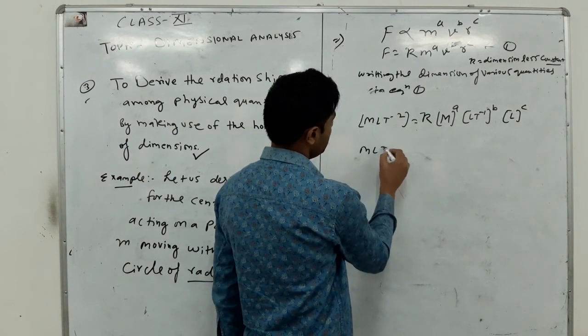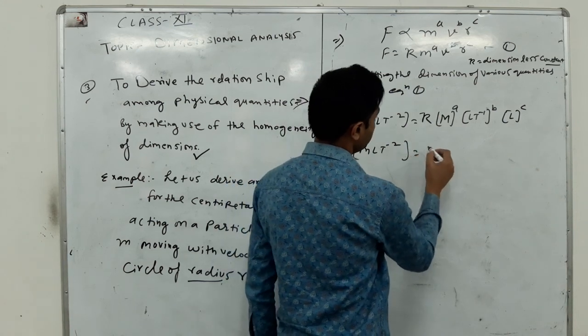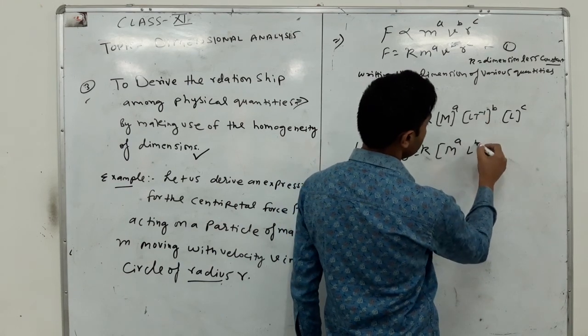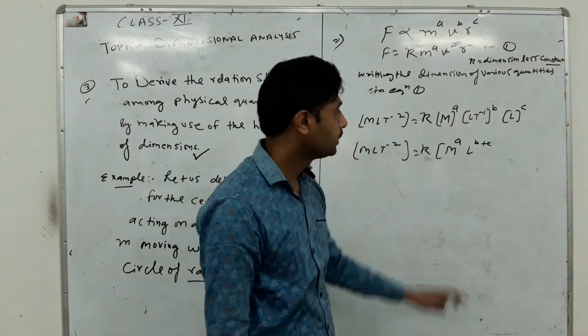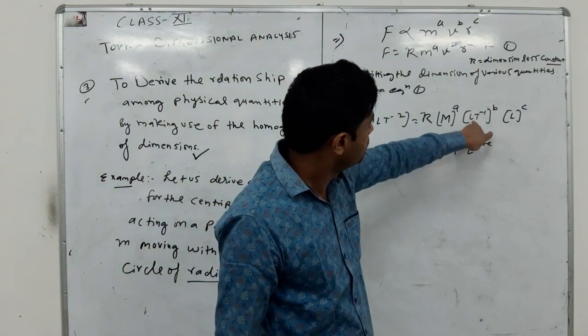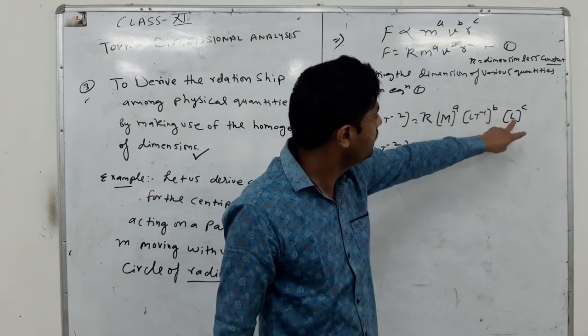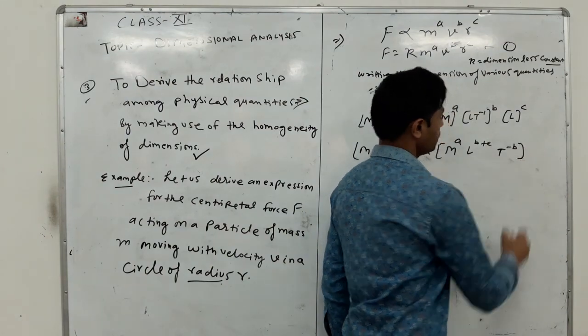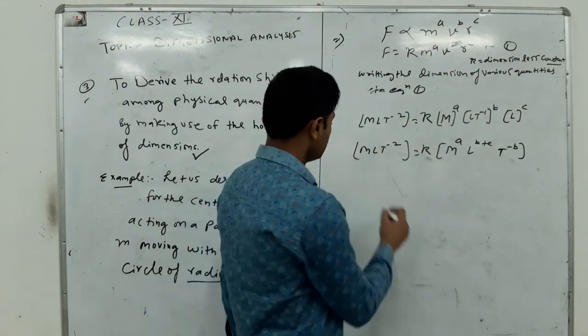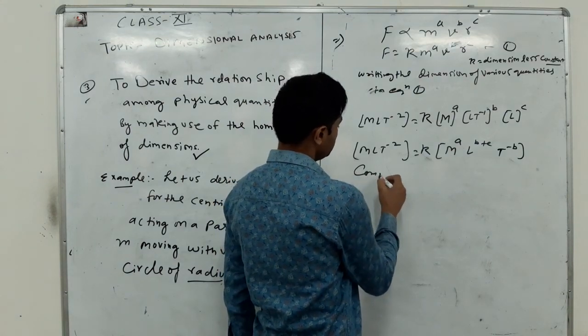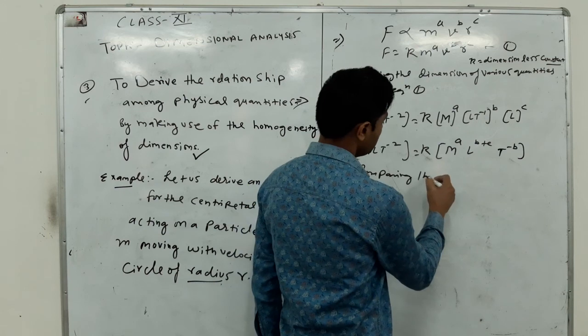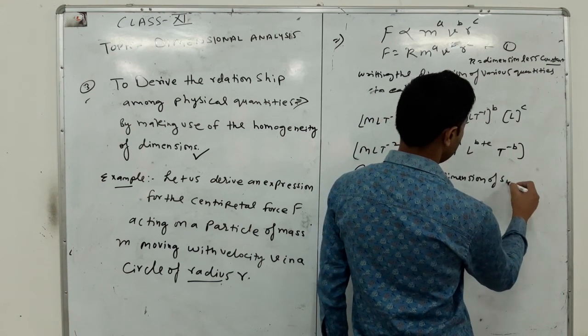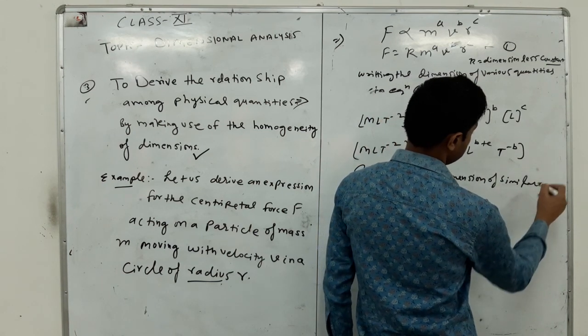So MLT^-2 equals M^A times (LT^-1)^B times L^C. From this we get M^A, L to the power B, L to the power C, and T to the power -B. So by comparing the dimension of similar quantities...